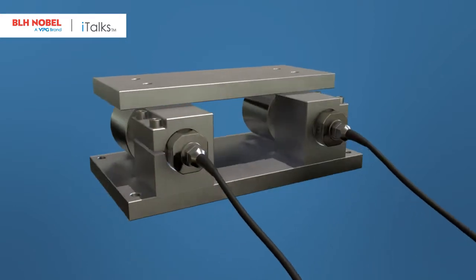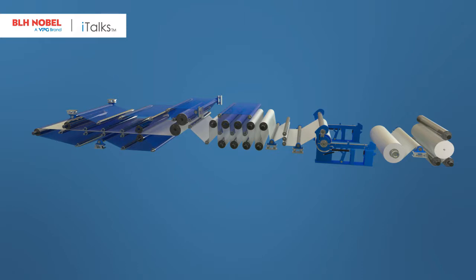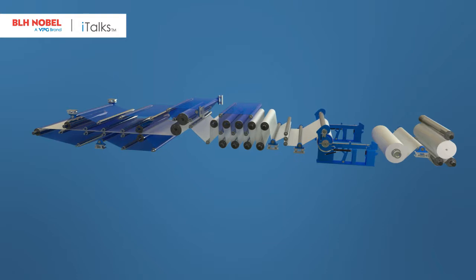The load cells and mechanical parts can be made in stainless steel. The high ingress protection of the FMU makes it suitable for all sections of the paper machine, both wet and dry sections.